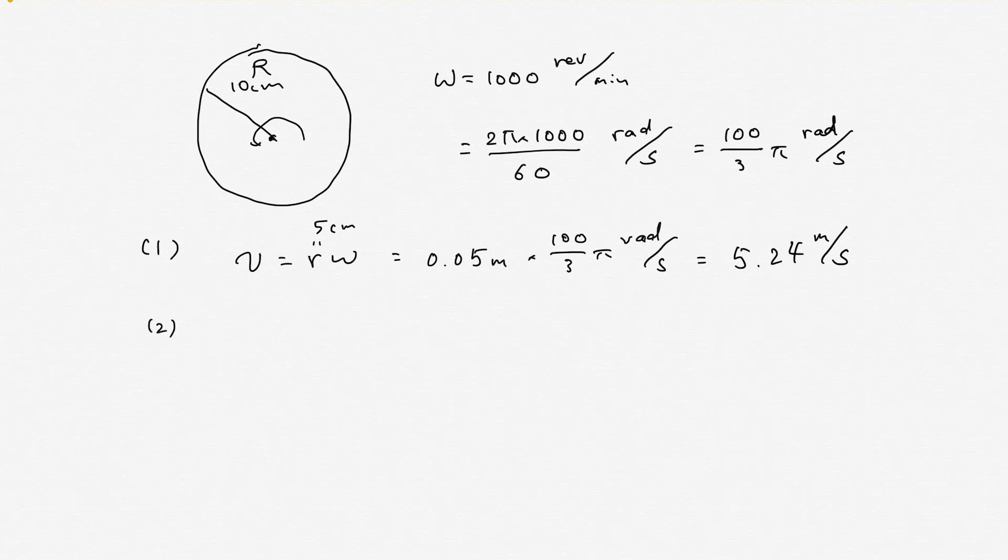And the second question is acceleration. Determine the radial acceleration of a point on the rim. So in this case, you can express r·ω². This is acceleration. Also, you can express v²/r.